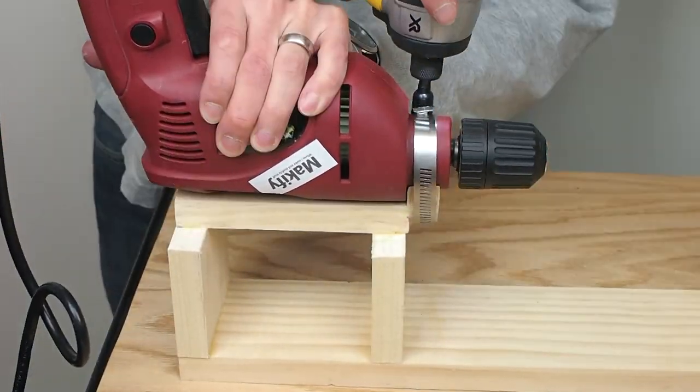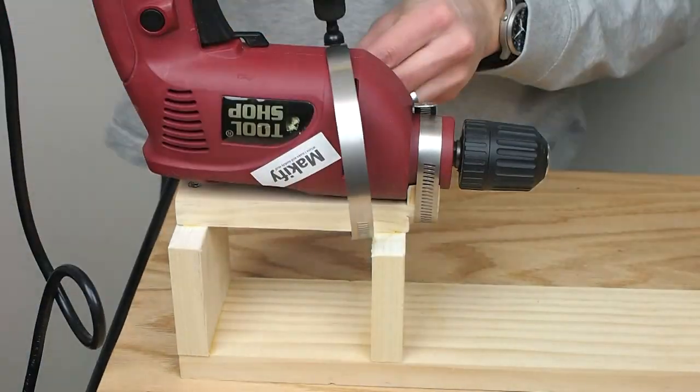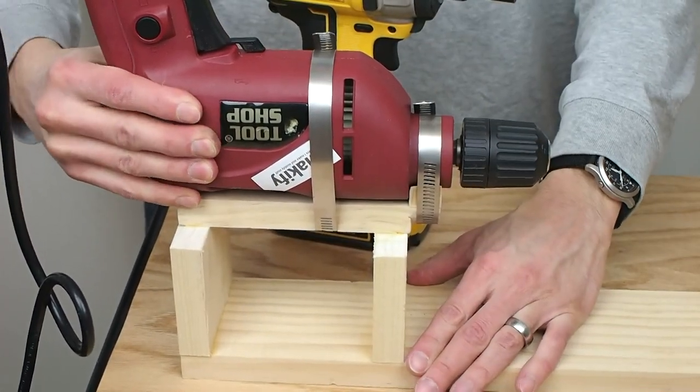The drill gets mounted upside down and it's held in position with two pipe band clamps and they do a really nice job of holding the drill firmly in place.